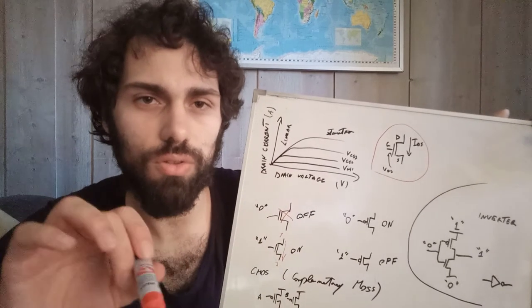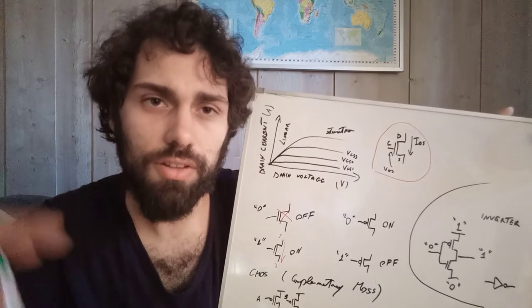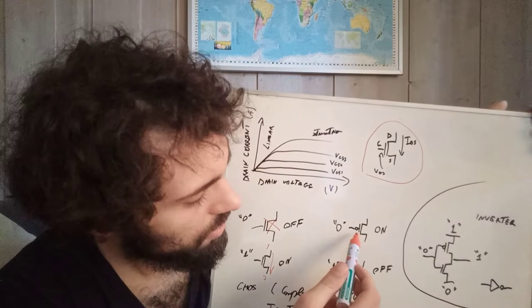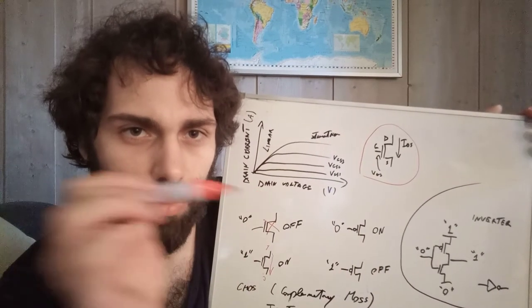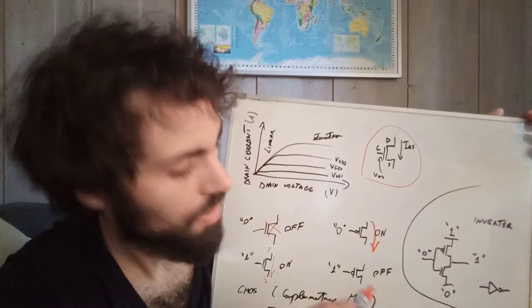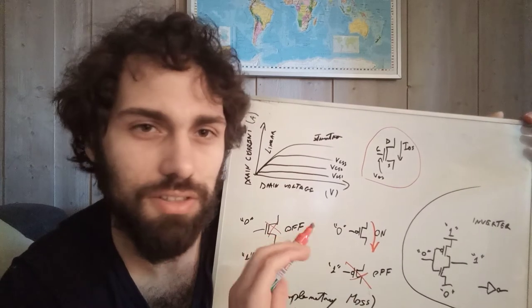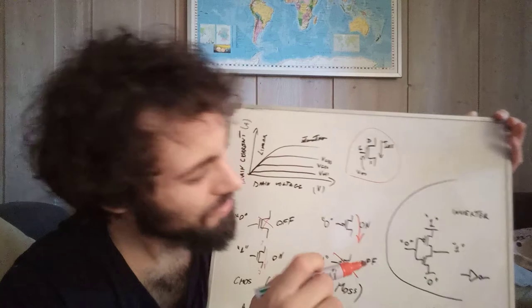NMOS, if it receives zero volts at the input, then it's off and doesn't conduct. The opposite for PMOS - PMOS is generally on when there is a zero at the input. If we give zero volts this guy conducts. If you give a one then it doesn't - it's like it's not in the circuit, it's disconnected, like no wire.